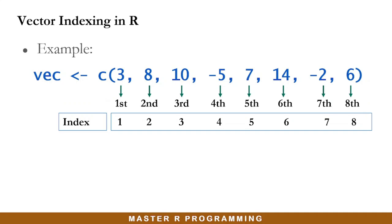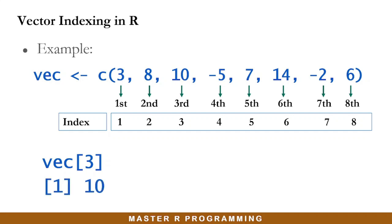Indexing in R starts at 1. Some programming languages start at 0. So if you want to extract the number 10 in this vector, you would write vec followed by the square bracket, and inside the square bracket specify the position of 10, which happens to be 3. When you execute that code, you will get the result 10.